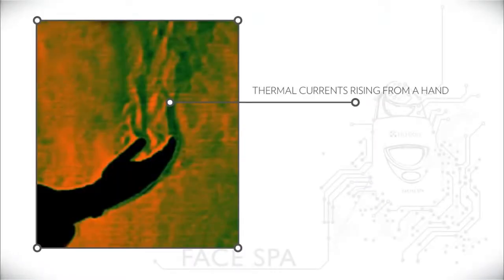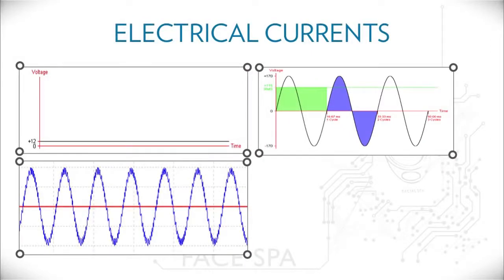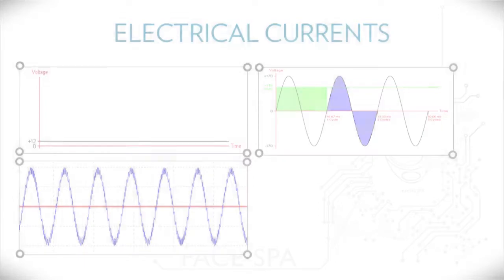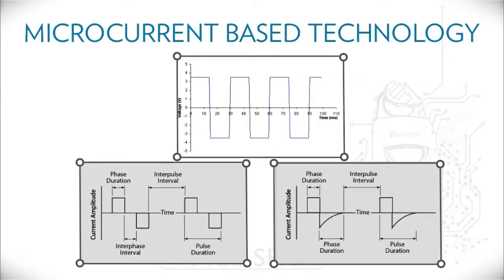Here you see an infrared photograph of the heat generated from the human hand that causes air currents to develop. But we can also look at electrical currents. In the upper left, you'll see a DC constant current. But on the right, an alternating current, where the current is both negative, then positive, then negative, then positive — and it alternates. This is a very clean sine wave. But down on the left, you'll see a sine wave that has a lot of fuzziness. Now, in microcurrent-based technology, these currents are just smaller, and they have characteristics.